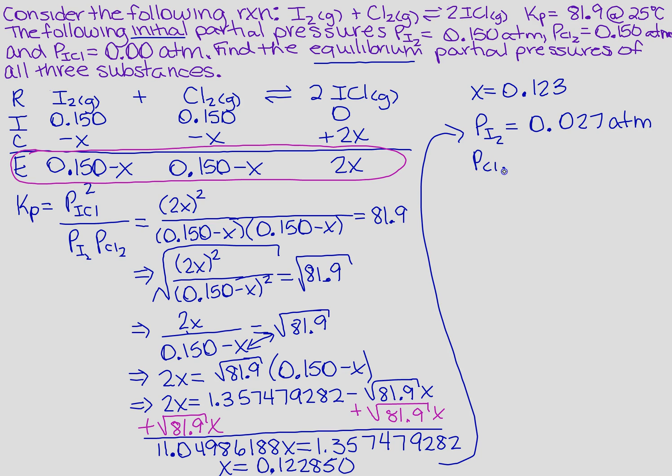Well, I also know that the pressure for Cl2 was also the same thing, the 0.150 minus X, so this number is going to be exactly the same as what I just found. So I'm going to get 0.027 atmospheres.